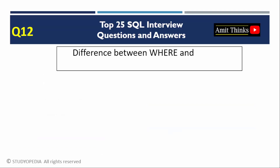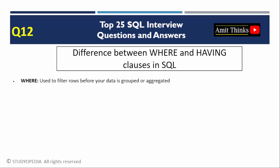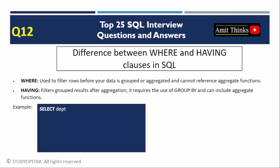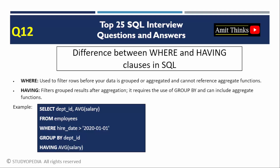Question 12: Difference between WHERE and HAVING clauses in SQL. WHERE filters rows before aggregation and cannot use aggregate functions. HAVING filters groups after aggregation, requires GROUP BY, and can use aggregate functions. Here is an example using both WHERE and HAVING together. The WHERE clause operates on individual rows while HAVING operates on grouped results.